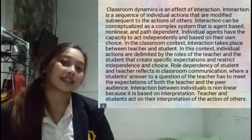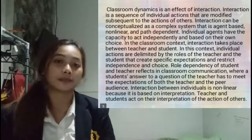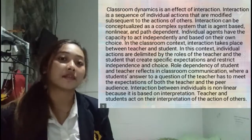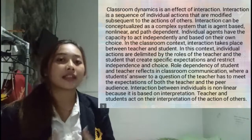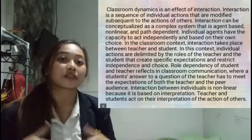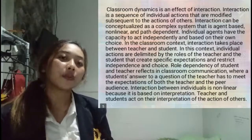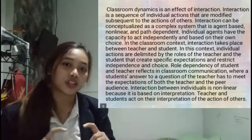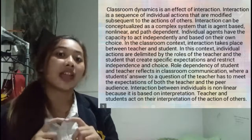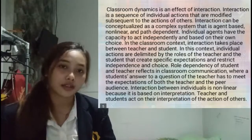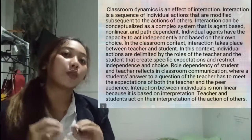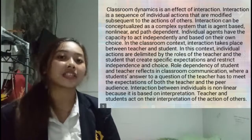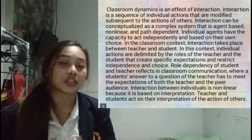In classroom interaction, interaction takes place between teacher and student. Individual actions are delimited by the roles of the teacher and the student, which create specific expectations and restrict independence and choice. Role dependency of student and teacher is reflected in classroom communication, where a student's answer to the teacher's question has to meet the expectations of both the teacher and the peer audience. Interaction between individuals is non-linear because it is based on interpretations — teachers and students act on their interpretation of the actions of others.